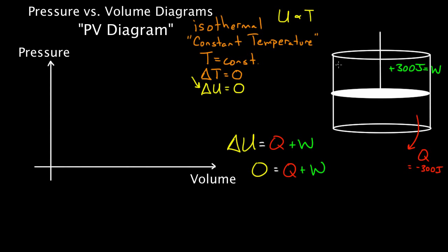It's not enough for just the initial temperature to equal the final temperature. For the process to be truly isothermal, the temperature has to remain the same at every moment. So every bit of energy you add has to immediately get taken away, or every bit you take away has to immediately get added back. There can't be a delay — otherwise the temperature would temporarily increase and then conduct out at its leisure, which doesn't count as isothermal.